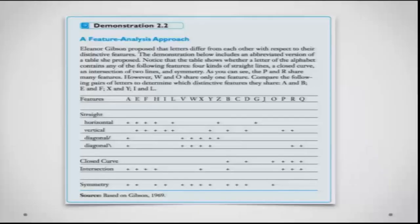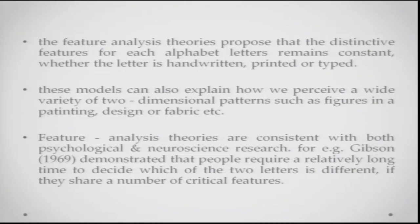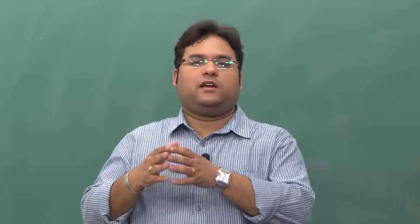Letters can be described by how their features are organized — straight horizontal, vertical, and diagonal lines; closed curves; intersections; and symmetry. Gibson showed how letters differ from each other with respect to these distinctive features, and believed this is how we recognize letters and how higher-level object recognition mechanisms work. Feature analysis theories propose that the distinctive features for each letter remain constant whether the letter is handwritten, typed, or photographed. These models can also explain perception of two-dimensional patterns such as figures in paintings or fabric designs.